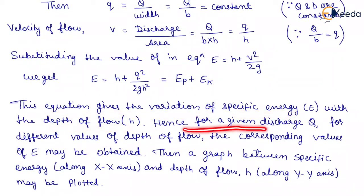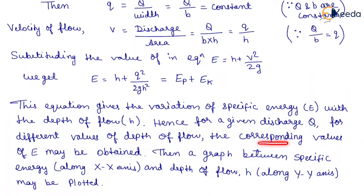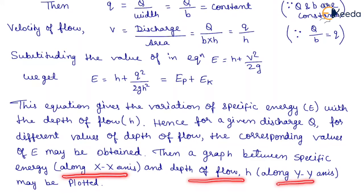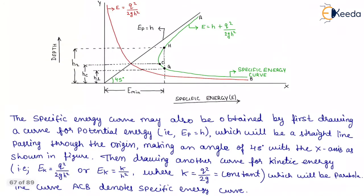Hence, for a given discharge Q, for different values of depth of flow, the corresponding values of E may be obtained. Then a graph between specific energy along the X-axis and depth of flow H along the Y-axis may be plotted, as shown here.